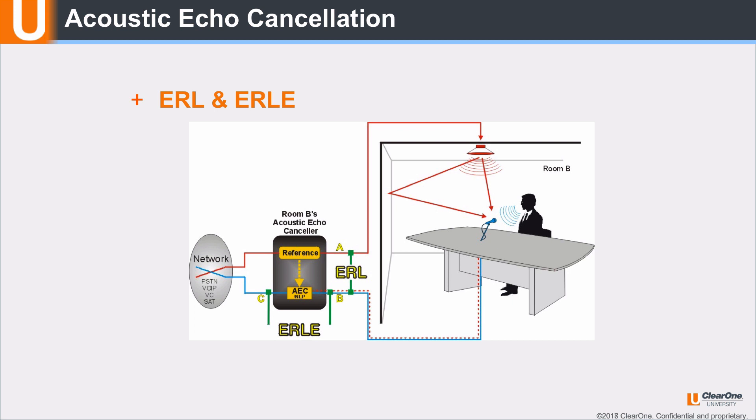Directional mics will also improve ERL by limiting loudspeaker to mic coupling compared to an omni mic in the same location. Improving ERL improves the performance of the acoustic echo canceler and the NLP.